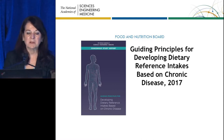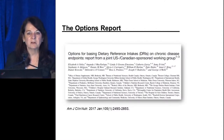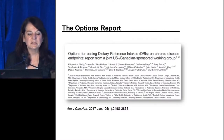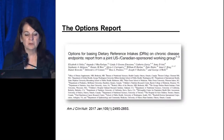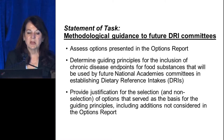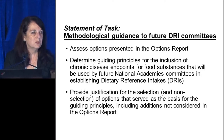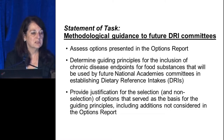I highly recommend reading the report. Before our committee started, another committee was pulled together to produce an options report. Many of the members who eventually became part of our committee spent an enormous amount of time coming up with various options that we then considered. This was published in the American Journal of Clinical Nutrition in 2017. Our statement of task for this National Academies Committee was to assess the options presented, determine guiding principles for inclusion of chronic disease endpoints, and provide justification for the selection as well as non-selection of options.